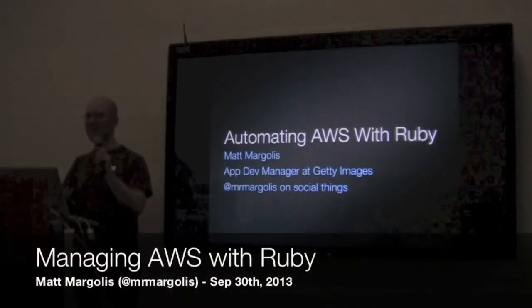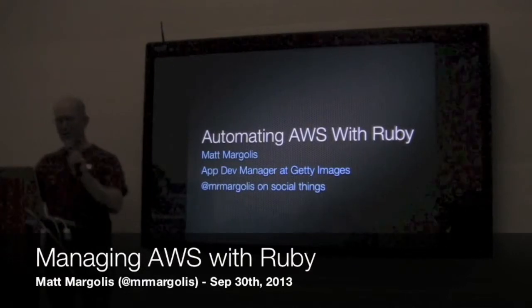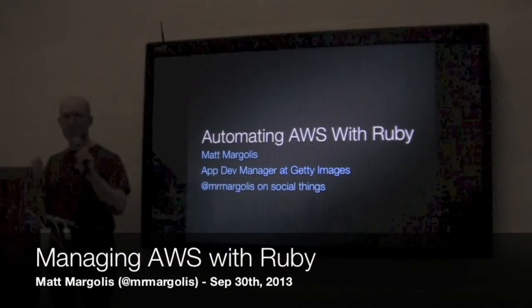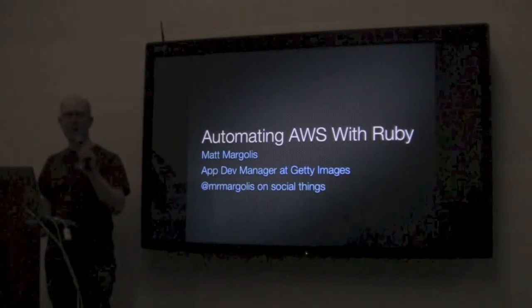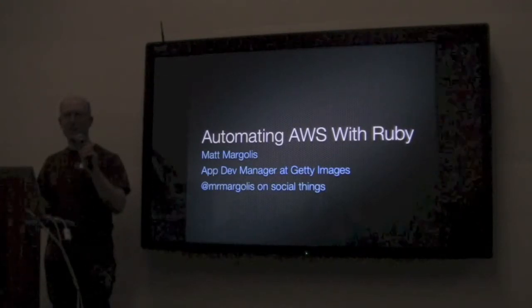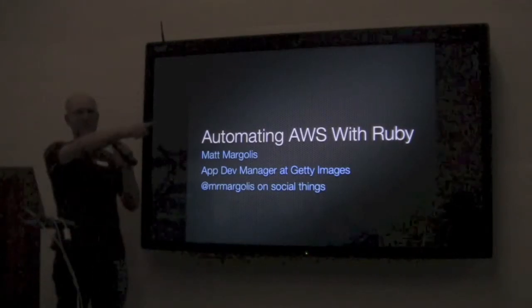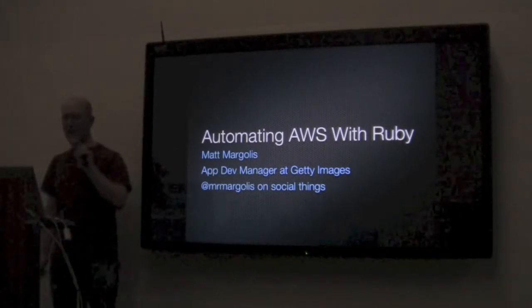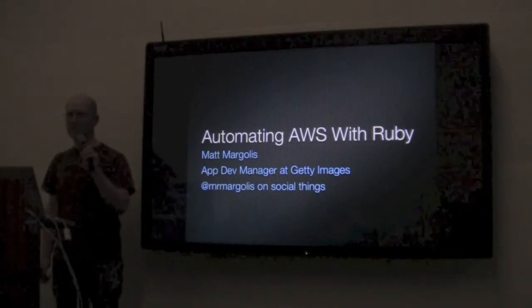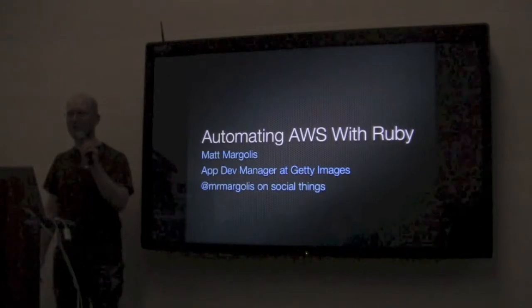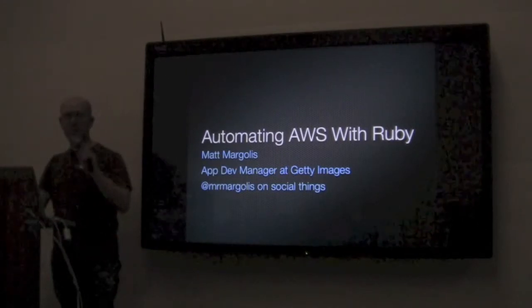I'm Matt Margolis. I am an application development manager with Getty Images — we're about a mile east of here. I'm Mr. Margolis on social things if you want to follow me. And we're going to talk about automating AWS with Ruby today.